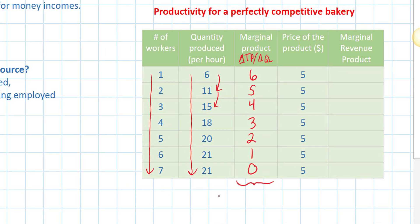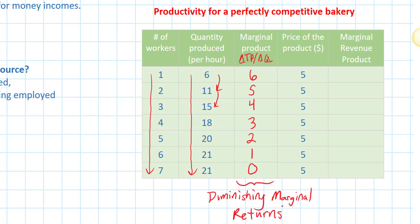Why does marginal product decrease? You may remember the concept of diminishing marginal returns — the idea that as a firm employs more of a variable resource like labor in the short run, when there are fixed resources such as the size of the bakery and the number of ovens, the output attributable to additional workers diminishes. There's not enough capital or space for these workers to become more productive.